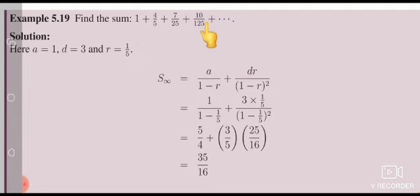1, 5, 25, 125. This is in geometric progression because the common ratio is 5.